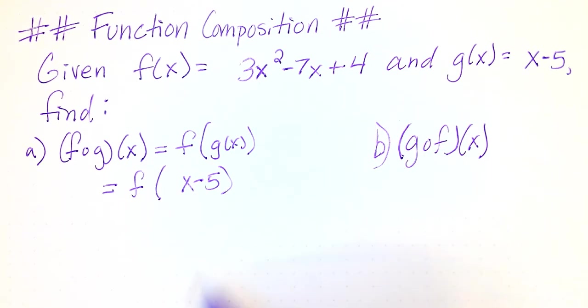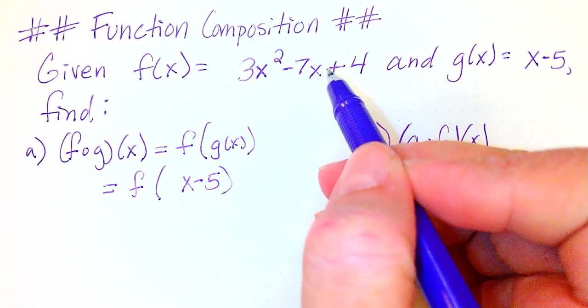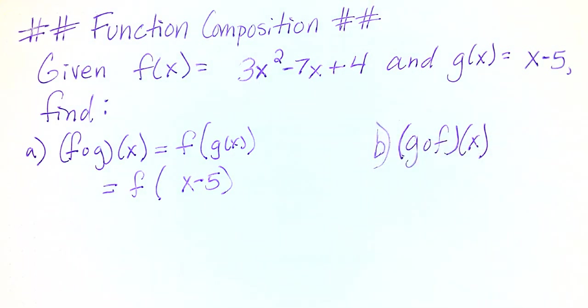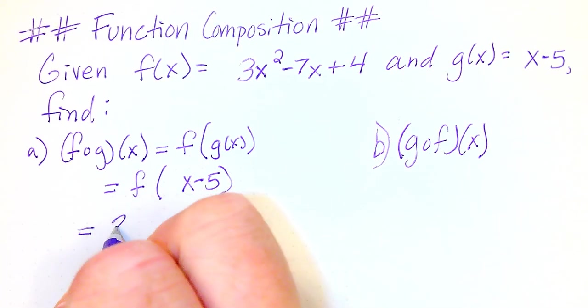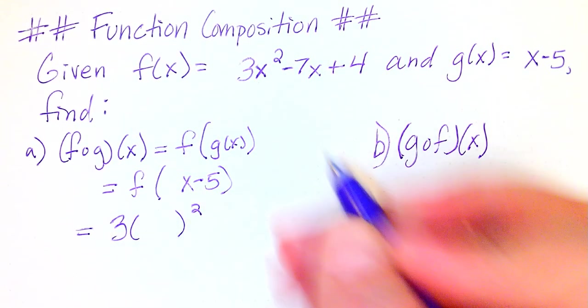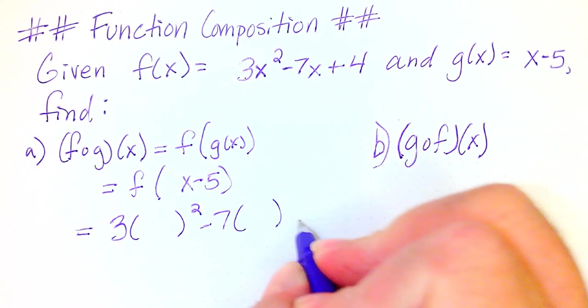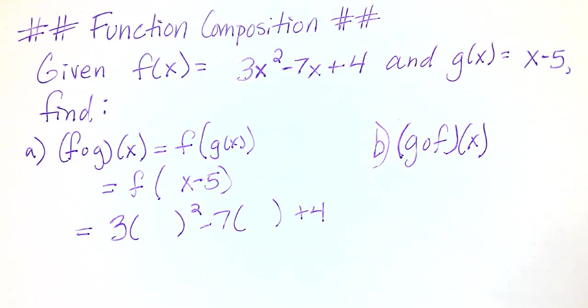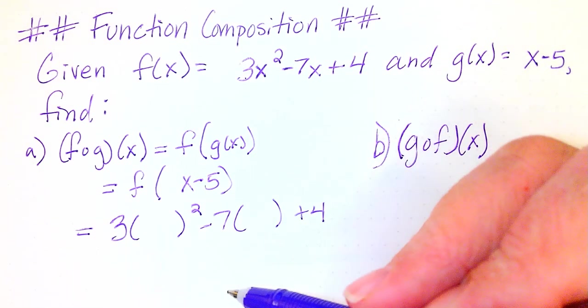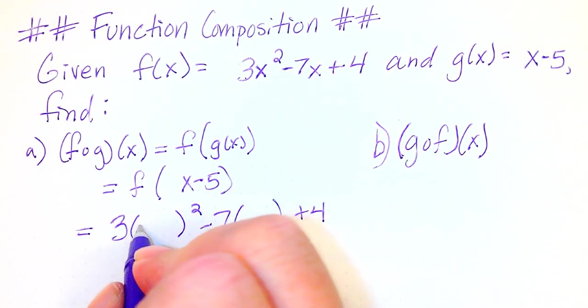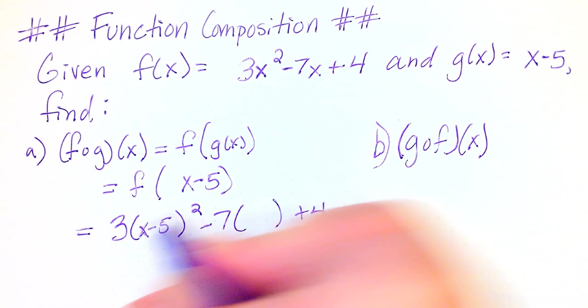So let's take f of x and I'm going to write it so that everywhere there's an x I'm going to put parentheses because we're going to be substituting something in there. So we're going to have 3 parentheses squared minus 7 parentheses plus 4. Now what goes in that parentheses? Well right here it says x minus 5. So let's put that here and here.